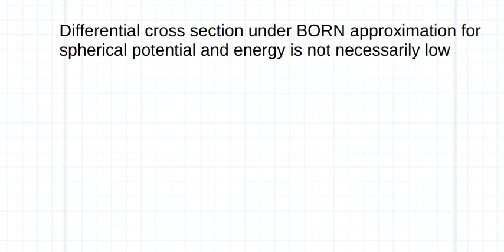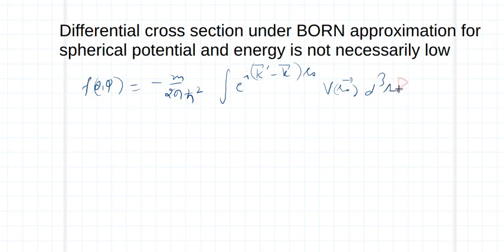Now I will again recall the formula for f of theta phi. It is scattering amplitude and this scattering amplitude is minus m over 2 pi h cross square, and this is e raised to per iota k prime minus k vector into r naught, and v r naught, and d cube r naught.